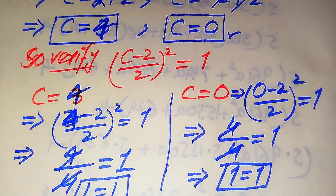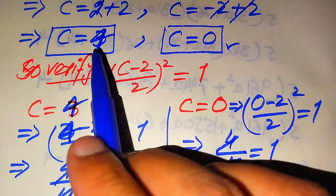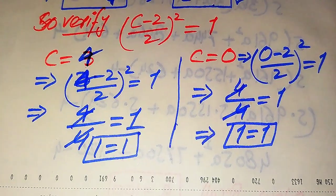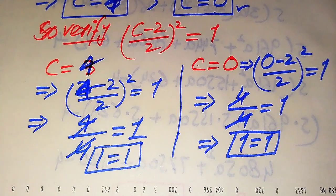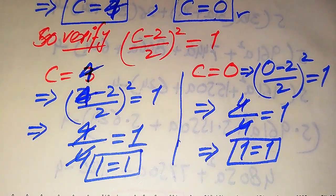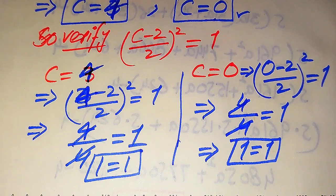Finally, the two solutions of the given equation are c equals 0 and c equals 3. Thank you so much for watching this video. Please subscribe to my channel for more exciting videos.